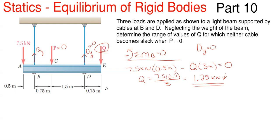All right, so then to find what Q needs to be to make BY equal to 0, well, we'll just switch our summation of points. We'll set BY equal to 0, and then sum about DY.